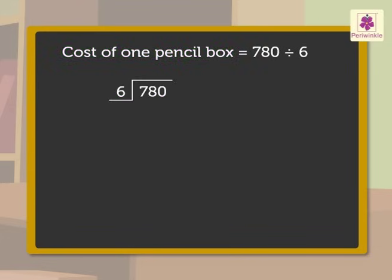So, here we need to first find out the value of 1 pencil box. We divide 780 by 6 to get the cost of 1 pencil box. We start with comparing the digit in the hundredths place, that is 7, with the divisor, that is 6.